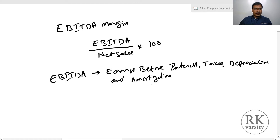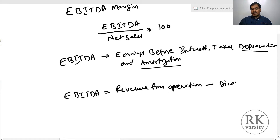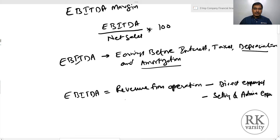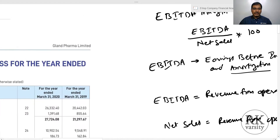Recent financial statements show depreciation and amortization together, so sometimes this is also called EBITDA margin. The EBITDA value is calculated as: revenue from operations minus direct expenses minus selling and administrative expenses. Net sales is considered as revenue from operations, meaning from total income we deduct other income.